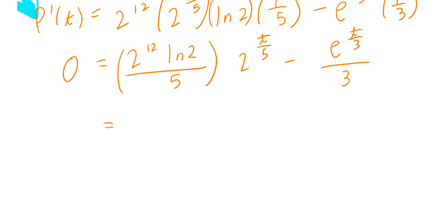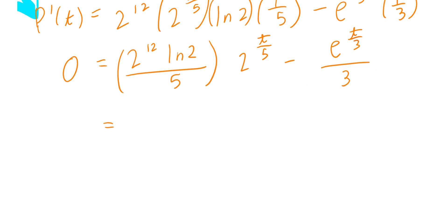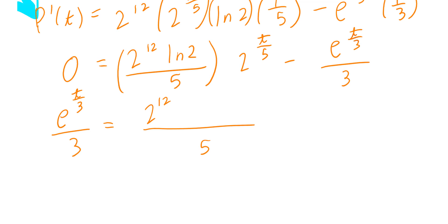The best way is to bring the negative e to the power of t divided by 3 divided by 3 term to the left-hand side, making it positive. On the right-hand side, copy as is. Express this as a fraction with the 5 at the bottom: 2 to the power of 12 times ln of 2 times 2 to the power of t divided by 5. Multiply both sides by 5 and divide by 2 to the power of 12 times ln of 2.